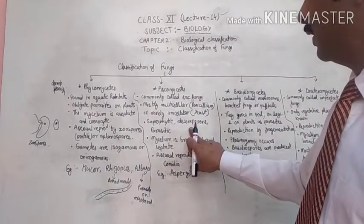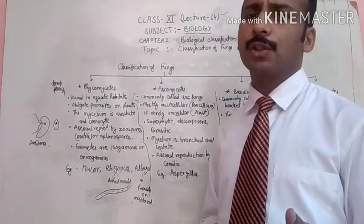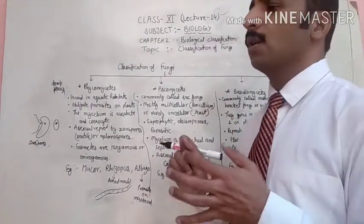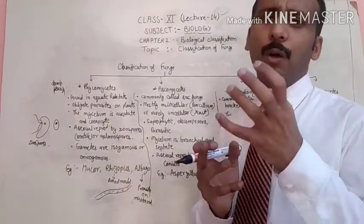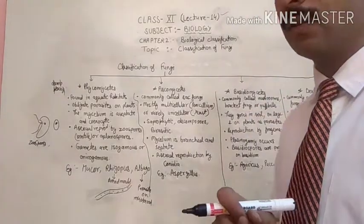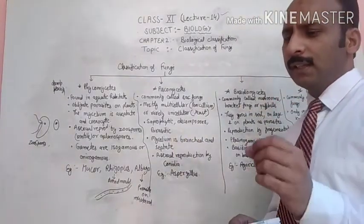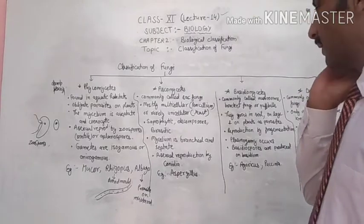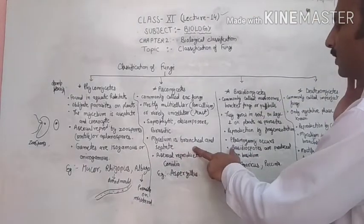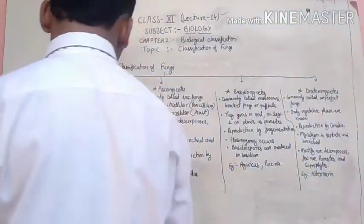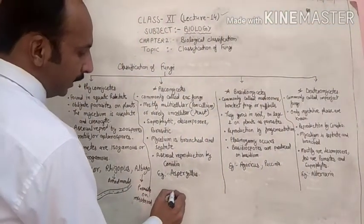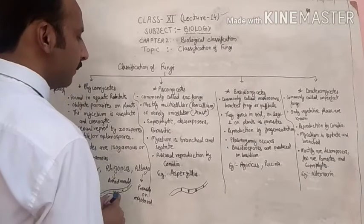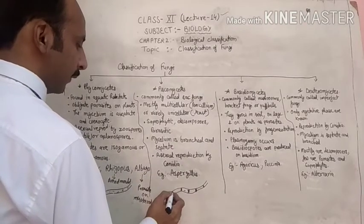Their nutrition may be saprophytic, decomposer, or parasitic. Saprophytic means they obtain nutrition from dead and decaying matter. Mostly they are decomposers — they break down complex units into simple units. Parasitic means obtaining food from other living organisms. The mycelium of Ascomycetes is branched and septate, unlike Phycomycetes where it is aseptate. Here the mycelium is septate and cenocytic.